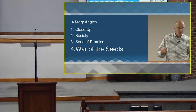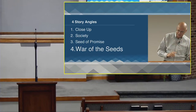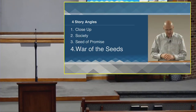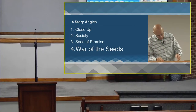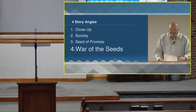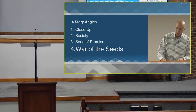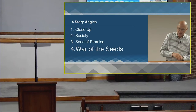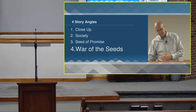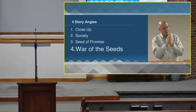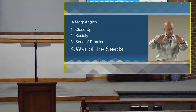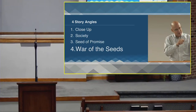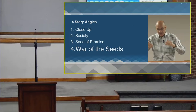The fourth angle is the war of the two seeds — the first mention and the tracking of God's promise of salvation, God's promise to Eve regarding her offspring, a witness that that promise was believed as we see Abel offering an acceptable sacrifice to God. Then we see the war of the seeds between the seed of woman and the seed of Satan. So: four different angles — close-up, a wider panoramic view of society, the seed of promise, and then the war of the seeds.